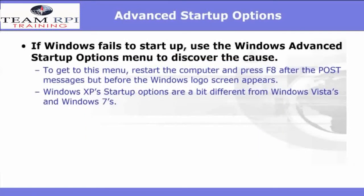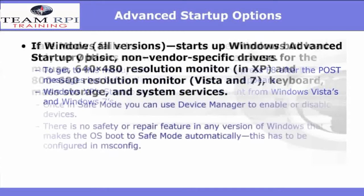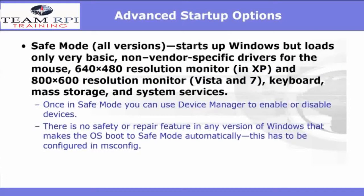If Windows fails to start up, you can use the Windows Advanced Startup Options. To get to this menu, restart the computer and press F8 after the POST message but before the Windows logo screen. Windows XP startup options are a bit different from Windows Vista and Windows 7. Here you'll have the option to start in Safe Mode. Once in Safe Mode, you can use the Device Manager to enable or disable trouble devices. However, in Safe Mode, there is no safety or repair feature in any version of Windows that makes the operating system boot into Safe Mode automatically. To configure the system to boot into Safe Mode automatically, it has to be done in MSConfig.